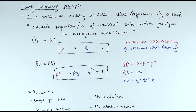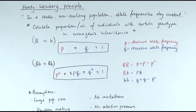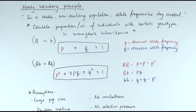So to summarise the Hardy-Weinberg principle: in a stable, non-evolving population, allele frequency stays constant. P plus Q equals 1, because all dominant and recessive alleles together represent 100% of that gene. P squared plus 2PQ plus Q squared equals 1, meaning all individuals with every possible genotype together make up the entire population. Assumptions include large population size, no mutation, completely random mating, and no selection pressure — meaning no evolution occurring.